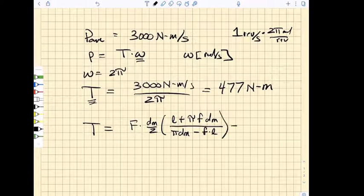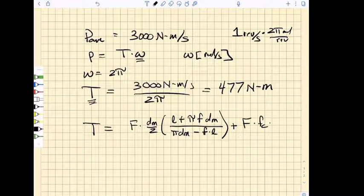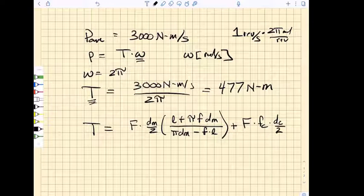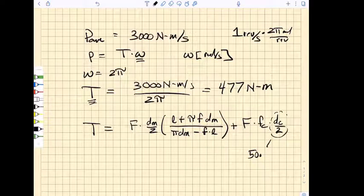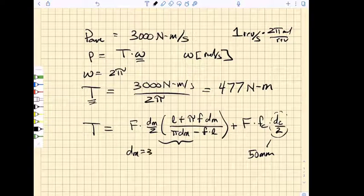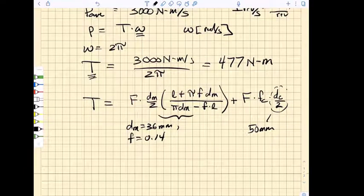We have to add to that the collar friction, which is the same force F being applied times the collar friction coefficient times the radius of the action of the forces on the friction collar. We know that this term is 50 millimeters. In this term up here, we now know that dm is 36 millimeters, f is 0.14, and the lead equals the pitch because we only have one thread, which is 8 millimeters. fc is 0.09.